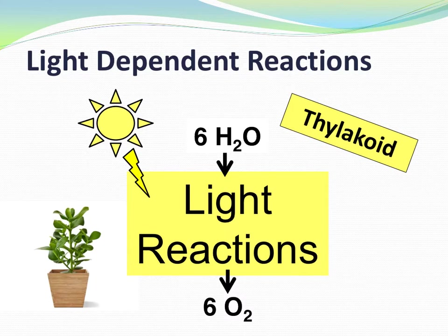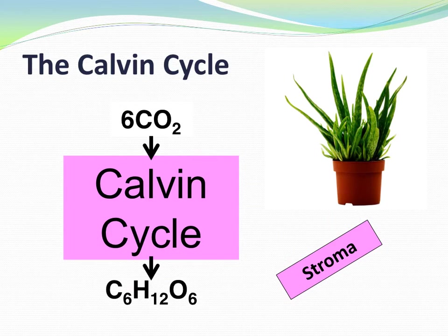Now let's consider the big picture of the Calvin Cycle. The Calvin Cycle uses the carbon dioxide that we animals exhale, and produces the plant's food. Think of it as a glucose factory. This chemical factory manufactures glucose in the liquidy stroma that fills the chloroplast.